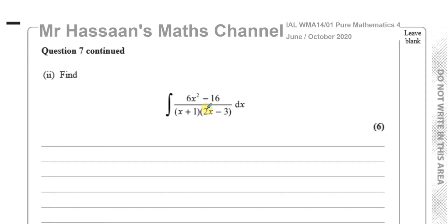However, we have to be very careful to check first whether it's an improper fraction or a proper fraction. If it's a proper fraction, we can go ahead straight away. If it's an improper fraction, we have to realize it splits up in a slightly different way because we're going to have a whole number part. This is an improper fraction because the numerator has an order which is the same as the order of the denominator — if the order of the numerator is the same or greater than the denominator, it will be improper. This is a quadratic and this is also a quadratic.